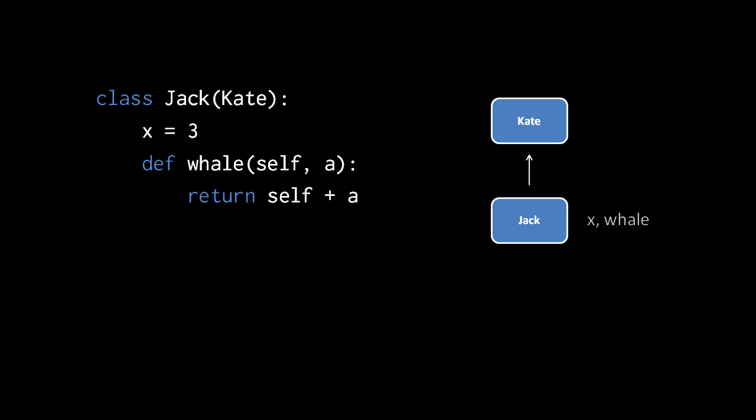So here in the parentheses, we have an expression of a variable Kate, presumably referring to the Kate class. And then after the parentheses, the header ends with a colon, and what follows is a body of code.